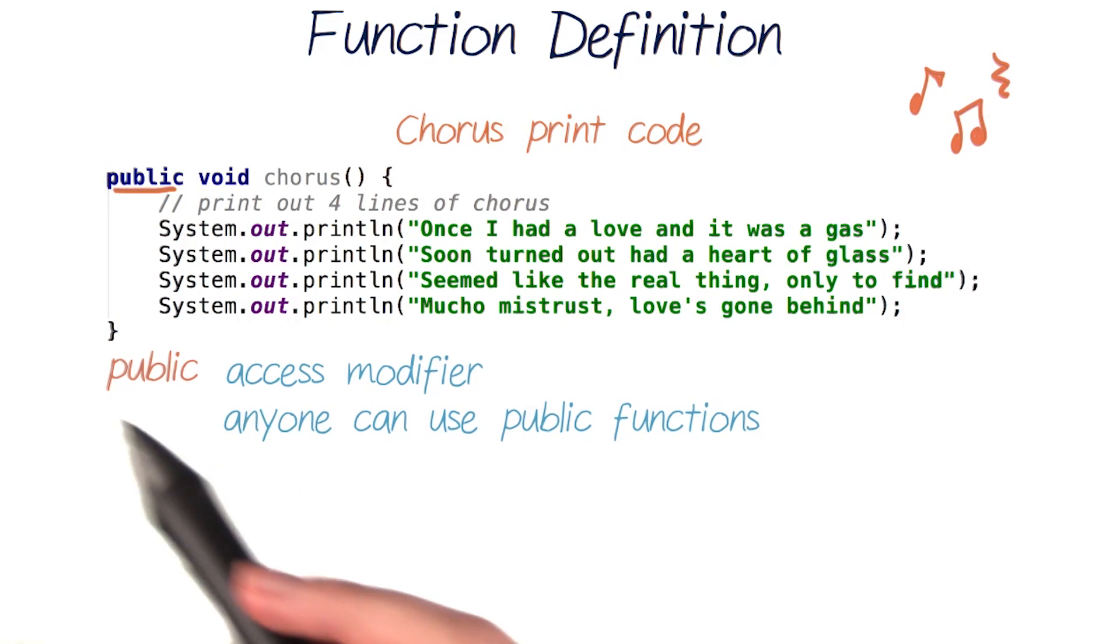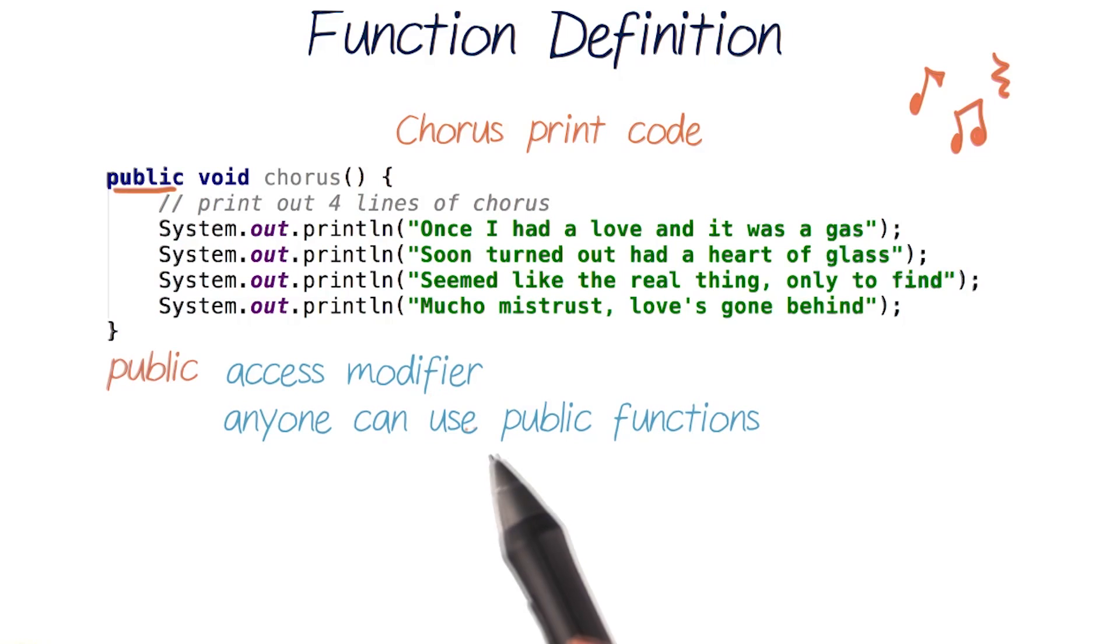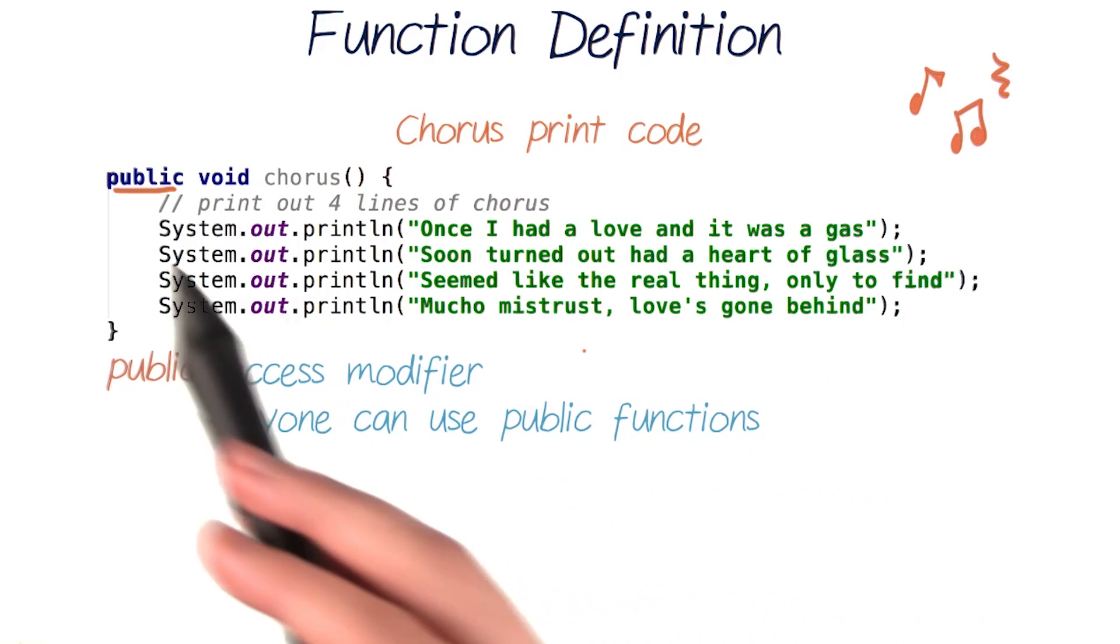The first thing we wrote was public. Java functions always start out with a word like public or private, and this is called an access modifier. Public tells our computer that anyone can access this function. We'll learn more about this later when we talk about objects, so for now just know that it's included at the start of a function.